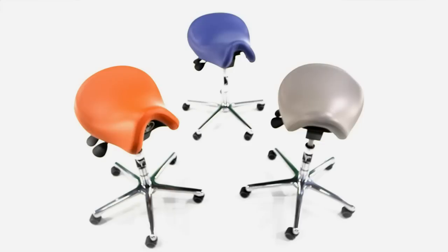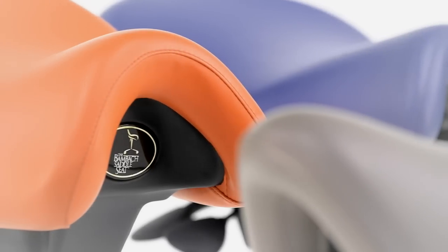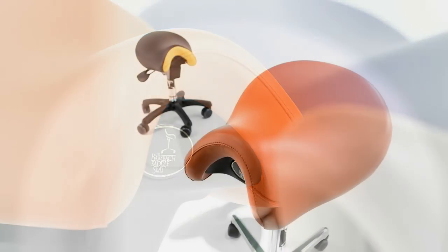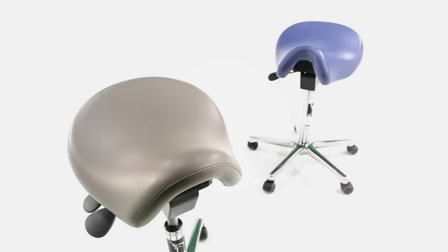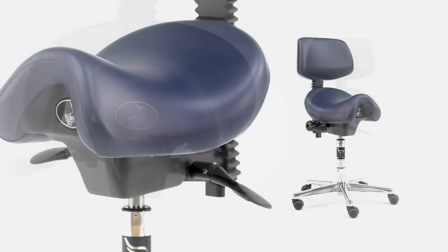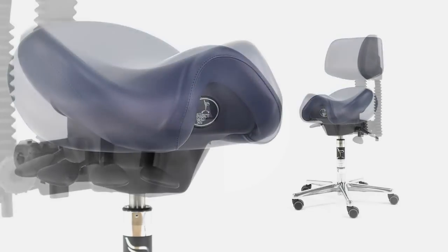Every BamBak saddle seat is custom-built to suit its user. It has very carefully designed proportions, and is available in four different saddle sizes, has a range of stem heights, and all BamBaks come with adjustable seat tilt for optimum balance.